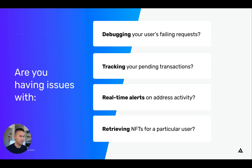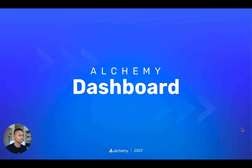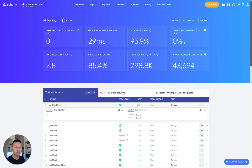If you're having issues debugging your users' failing requests, tracking pending transactions, getting real-time alerts on address activity, or retrieving NFTs for a wallet — all of these problems we can help make easier and more streamlined. Here's an example: when you make requests to a blockchain with errors yourself, it's easy to debug those issues. However, what do you do when your users are making bad requests in production? You'd have to build an extensive logging and tracking system. Wrong — Alchemy's dashboard gives you all the insight you need to look into your requests. Let's look at the Alchemy dashboard for one of our customers and see how they're collecting detailed stats on the health of their traffic.